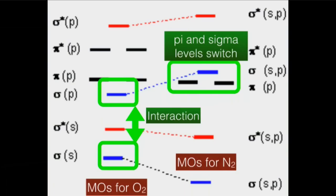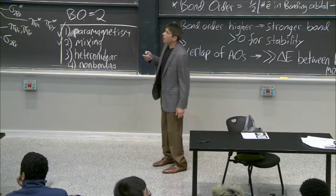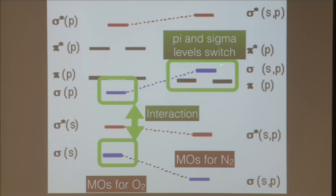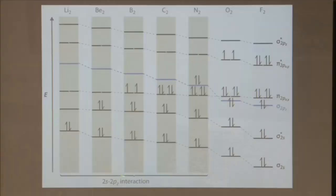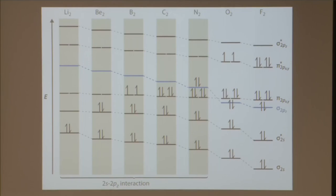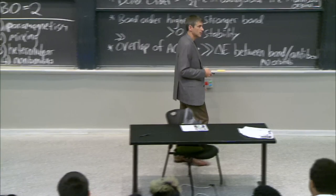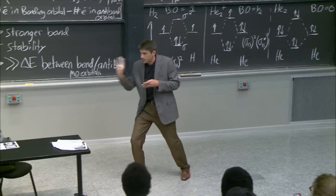The mixing doesn't change the magnetic properties of N2 since all orbitals are still filled. But it is important because if you pull an electron out of N2, it comes from a sigma orbital, not a pi orbital, because of those interactions. This is shown in the textbook: the 2s-2pz interaction — same symmetry, able to mix — is strong enough for lighter atoms to change the ordering of those orbitals. It only happens below oxygen.